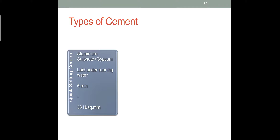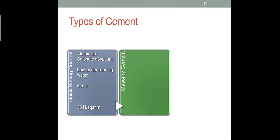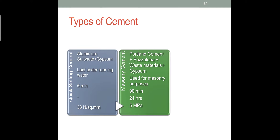In quick setting cement, the gypsum amount is increased — about 5% is added instead of the normal 3%. The next cement is masonry cement, which we use for masonry purposes such as laying bricks, stones, and walls for general mason work.